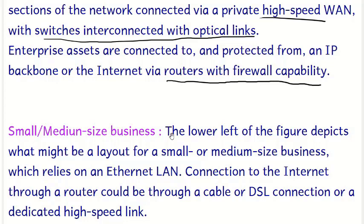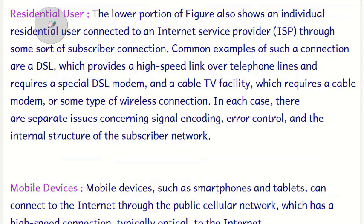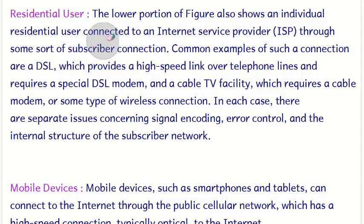The lower-left of the diagram depicts a layout for small and medium-sized businesses. These businesses rely on Ethernet LANs, and their connection to the internet through a router could be via a cable or DSL connection, or a dedicated high-speed link. Residential users in the lower portion are connected to internet service providers through subscriber connections.